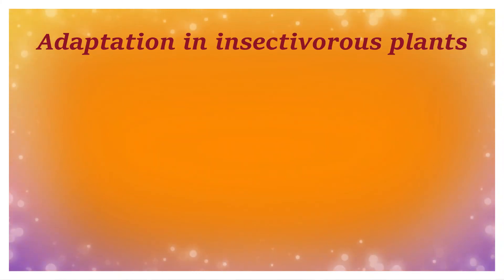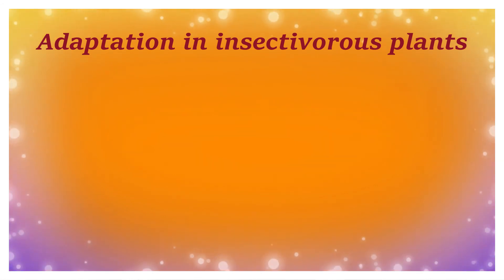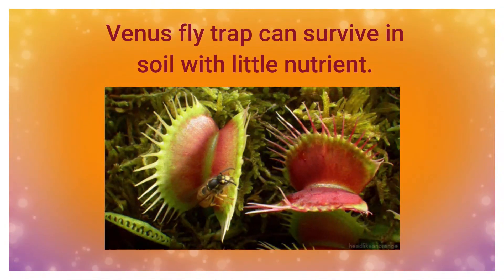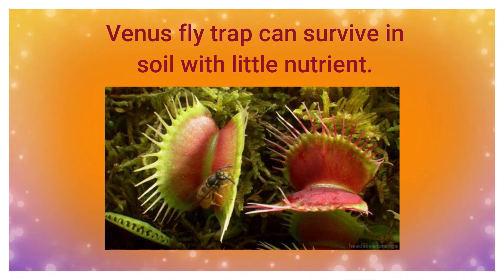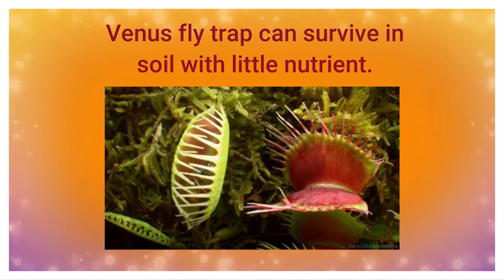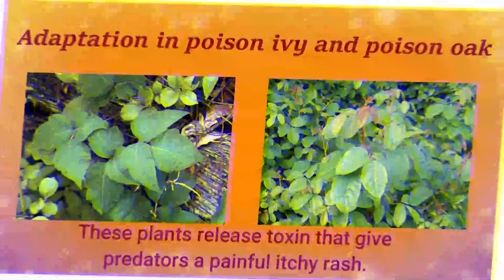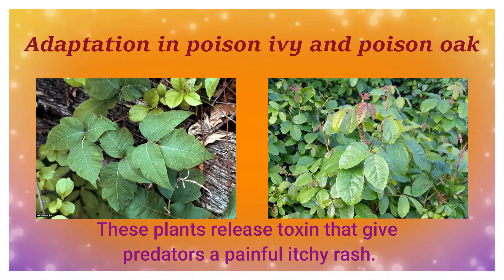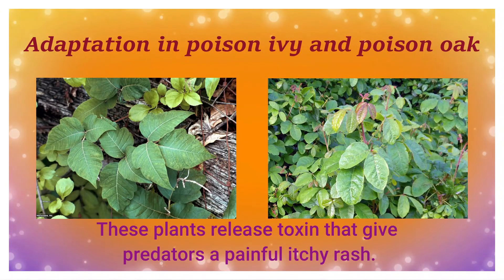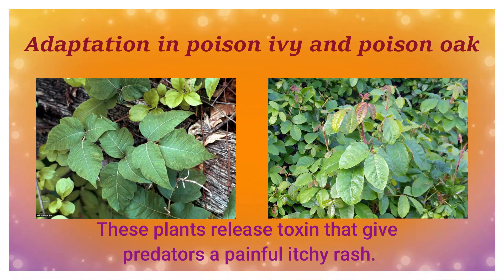Behavioral adaptations can also be seen in insectivorous plants like the Venus flytrap. It is adapted to survive in soil with very little nutrient, as this plant traps insects and gets its nutrients from eating them. Another behavioral adaptation is seen in poisonous plants like poison ivy and poison oak — they release toxins that give predators a painful, itchy rash, which prevents them from eating the plant.